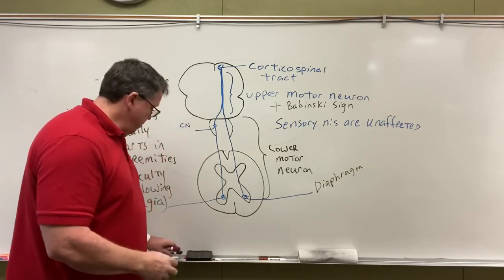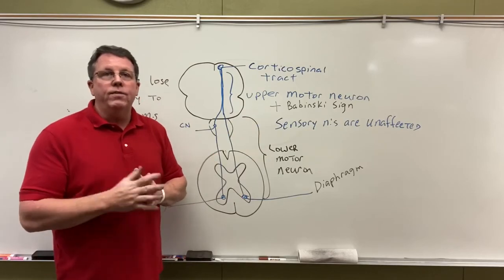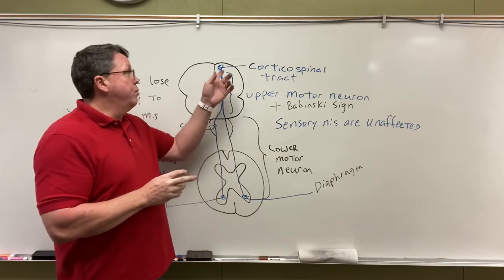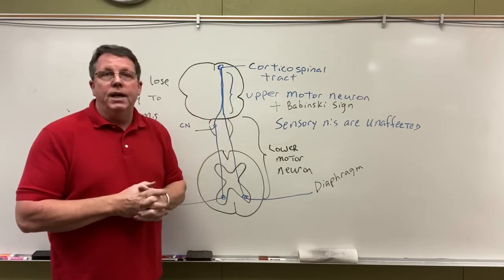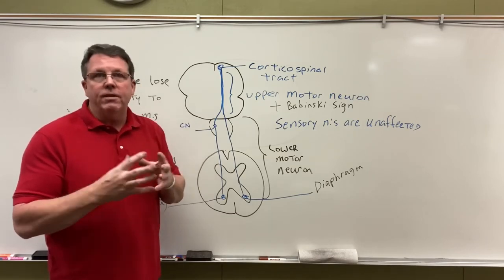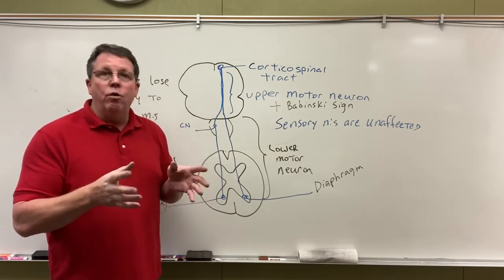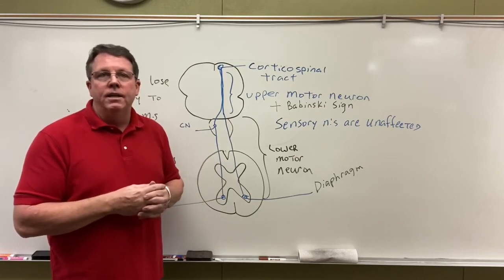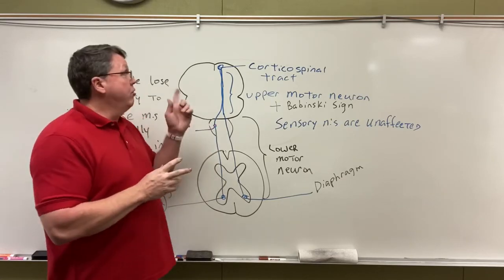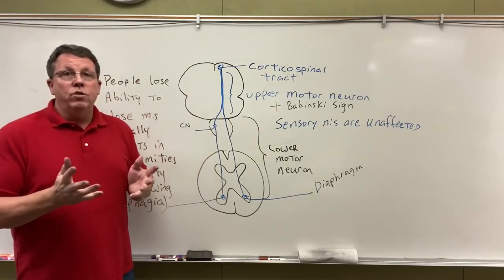As for what causes ALS, about five percent of the time it's genetic. Most of the time the cause is unknown, but it could be due to bad proteins that can't get into the nucleus and start to gather as protein aggregates, which can damage other organelles inside the cell. That's it for amyotrophic lateral sclerosis — I hope you enjoyed this video.